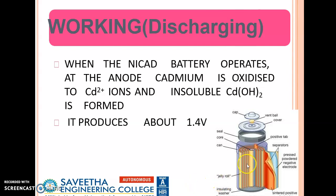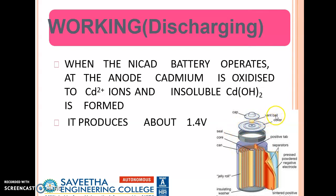The construction of a NiCAD battery consists of: a positive tab, a separator, a pressed powder negative electrode, a jelly roll, an insulating washer, and an enclosed can. The core is sealed with a cover and includes a vent ball and a cap.